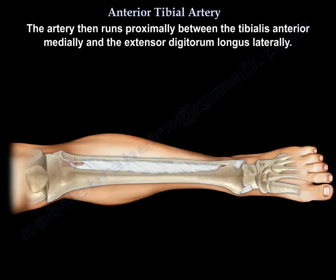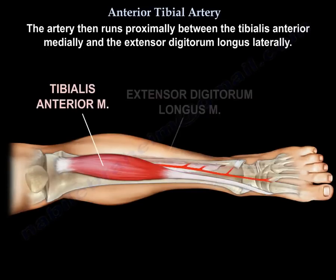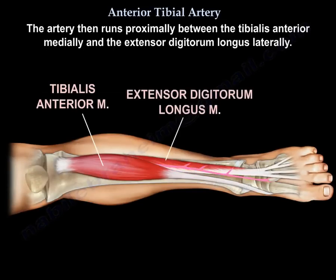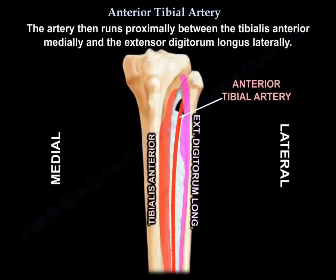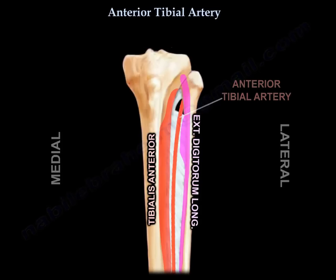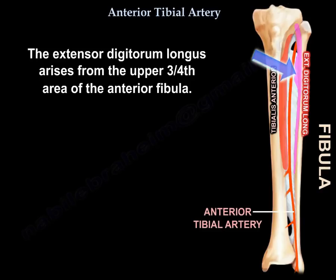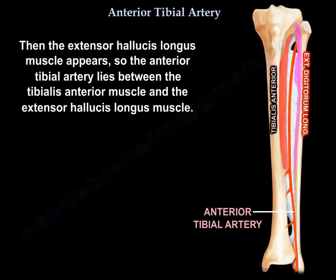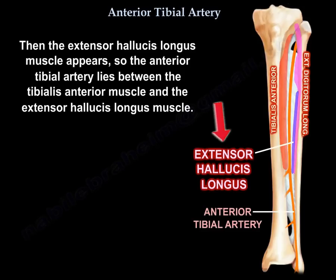The artery then runs proximally between the tibialis anterior medially and the extensor digitorum laterally. The extensor digitorum longus arises from the upper three-fourths of the anterior fibula. Then the extensor hallucis longus muscle appears, so the anterior tibial artery lies between the tibialis anterior muscle and the extensor hallucis longus muscle.